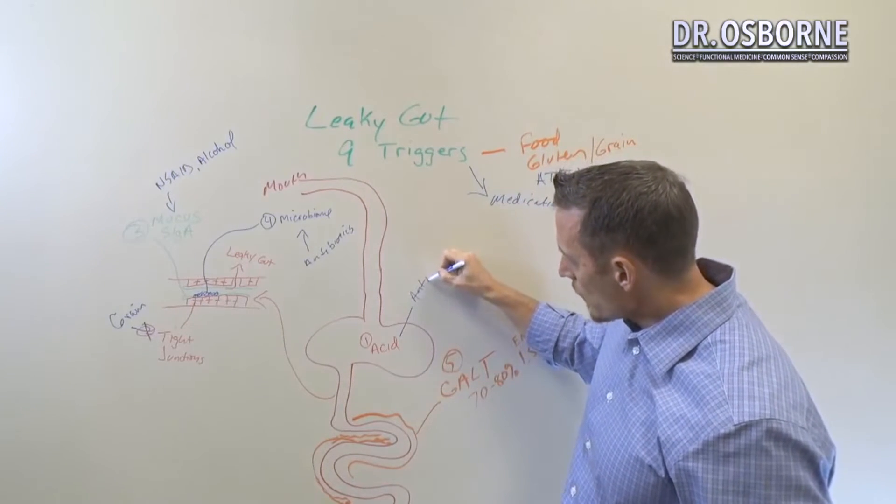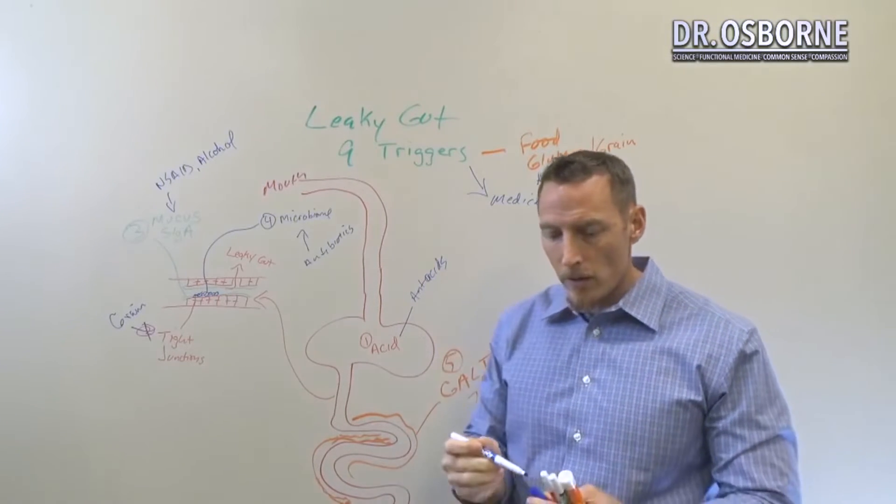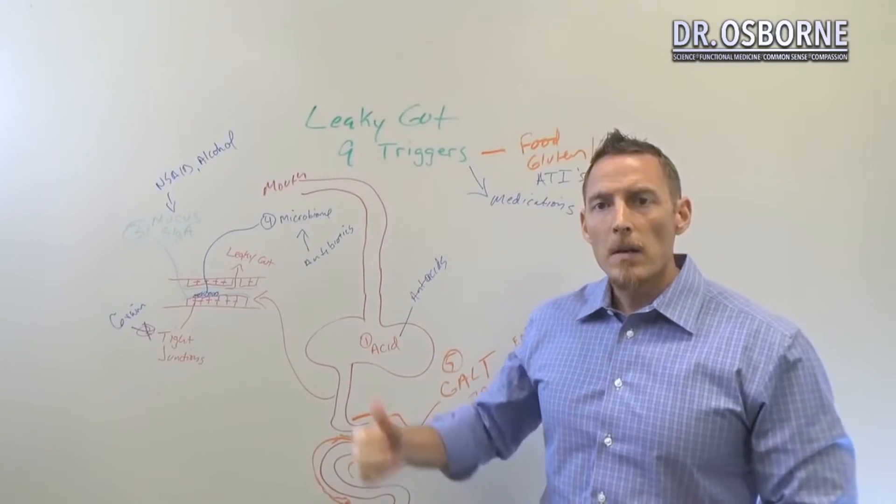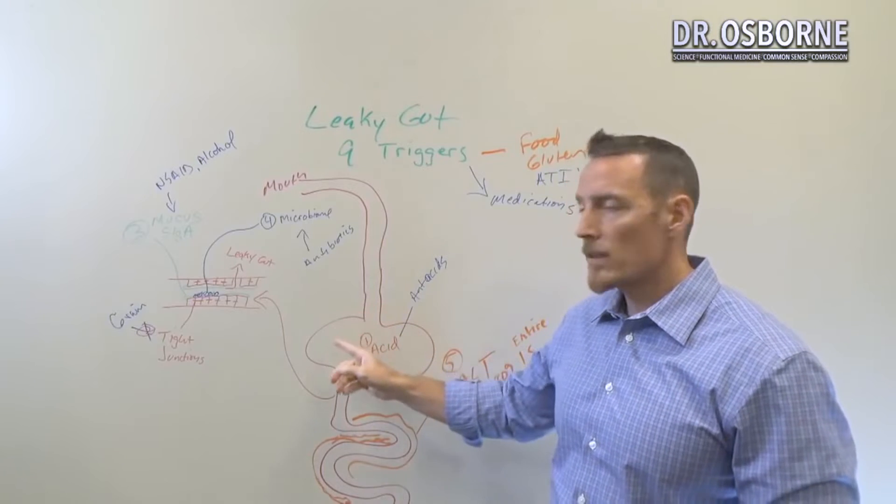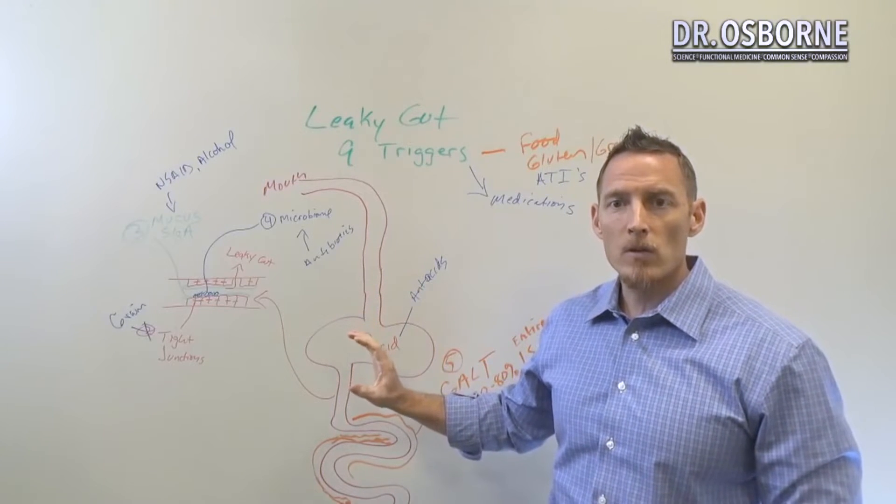or Prilosec or Nexium or Tagamet or Zantac or Prevacet, any of these medicines that block acid production, remember you're taking out the entire first barrier of the GI tract when you're taking those medicines.